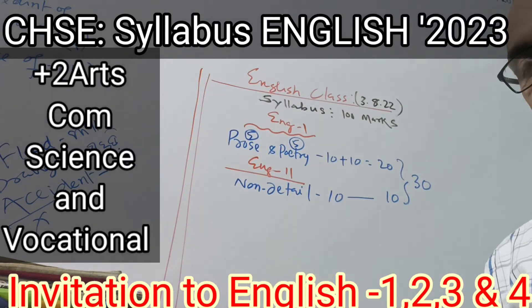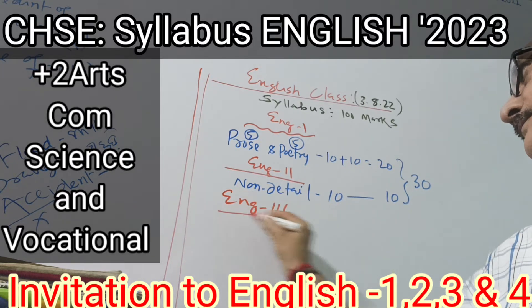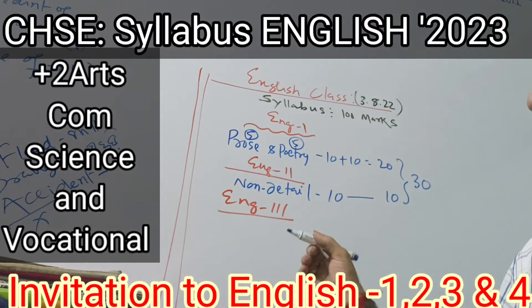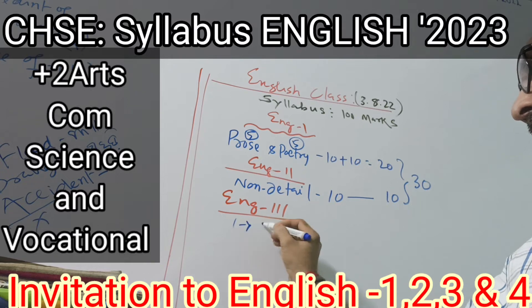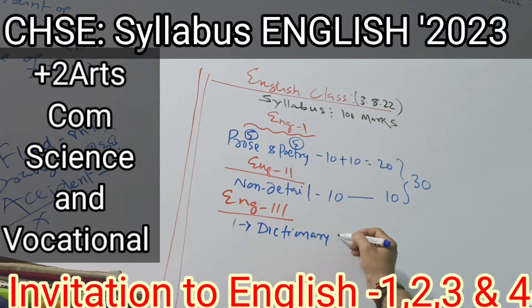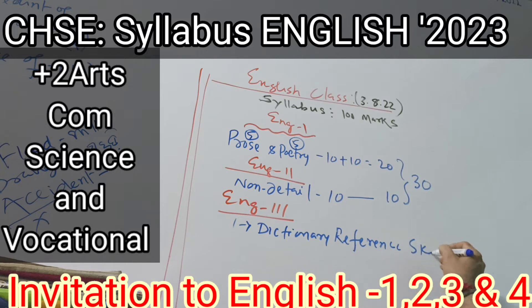Next is English 3. Dictionary reference skill — 5 marks. Dictionary reference skill — 5 marks.